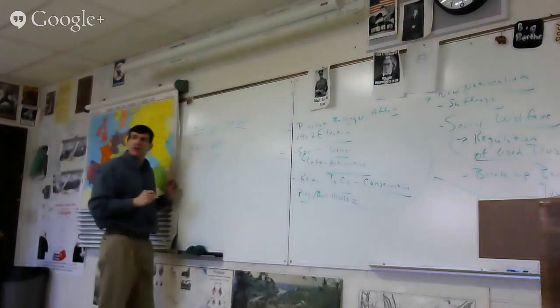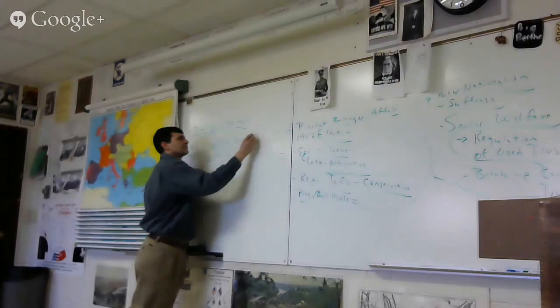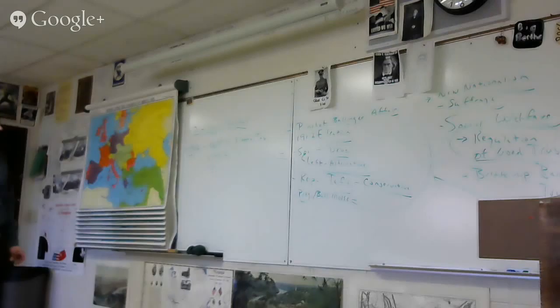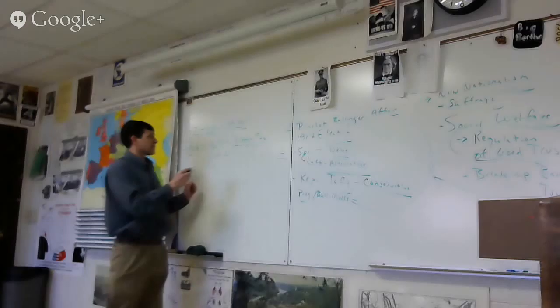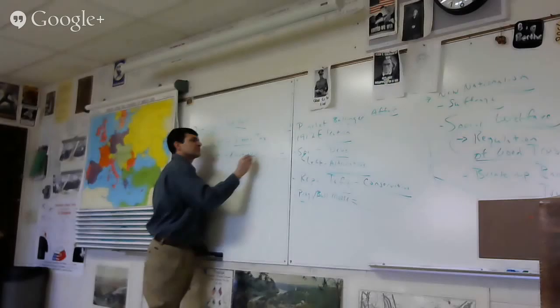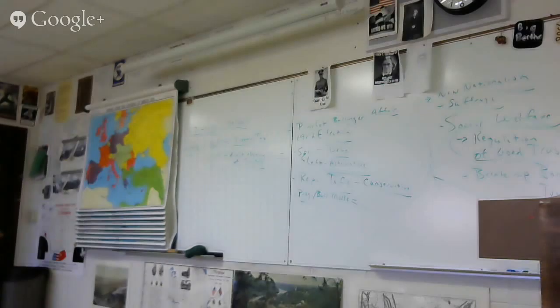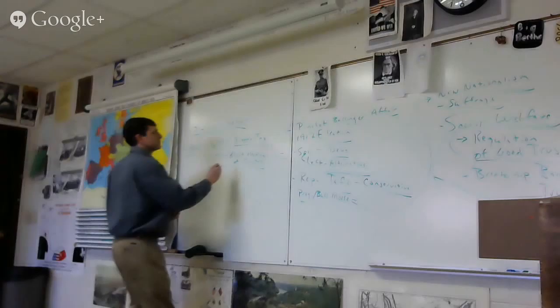Two amendments. The 16th, allowing for an income tax. It's very vague in the Constitution, especially because the idea of an income was foreign when they wrote it. So they clarified the federal government and therefore the state governments can have an income tax. And the 17th, direct election of senators. The people can now vote.